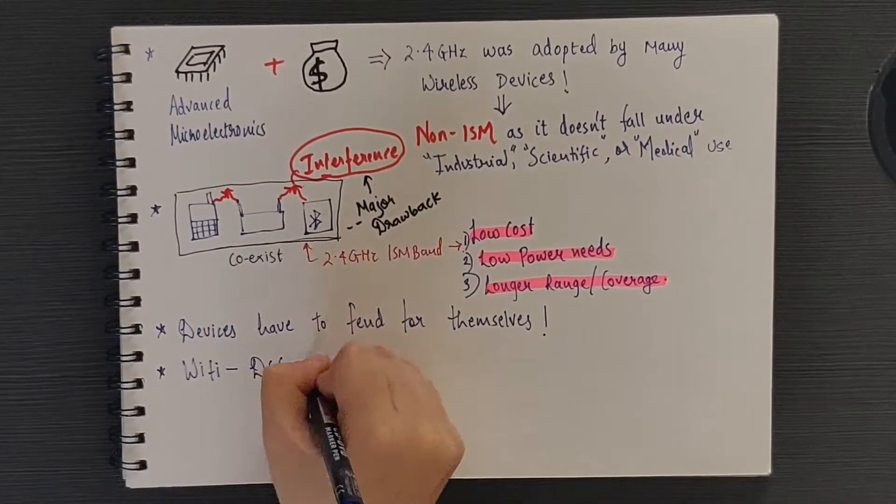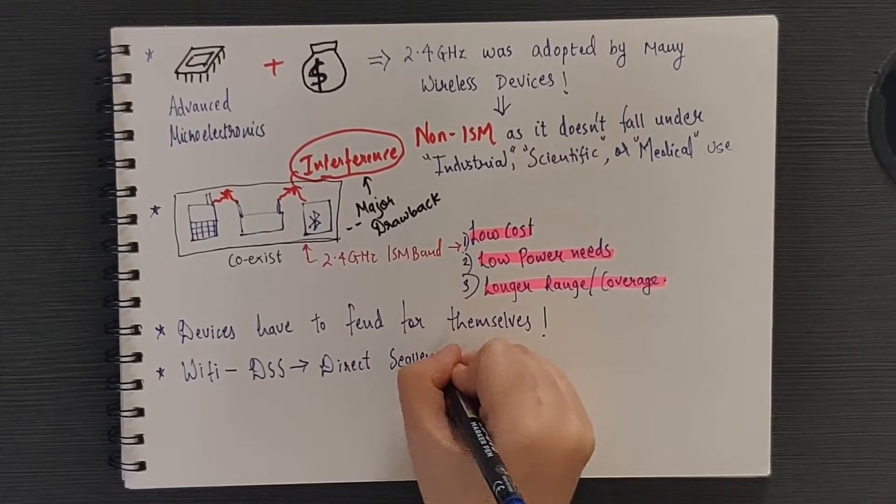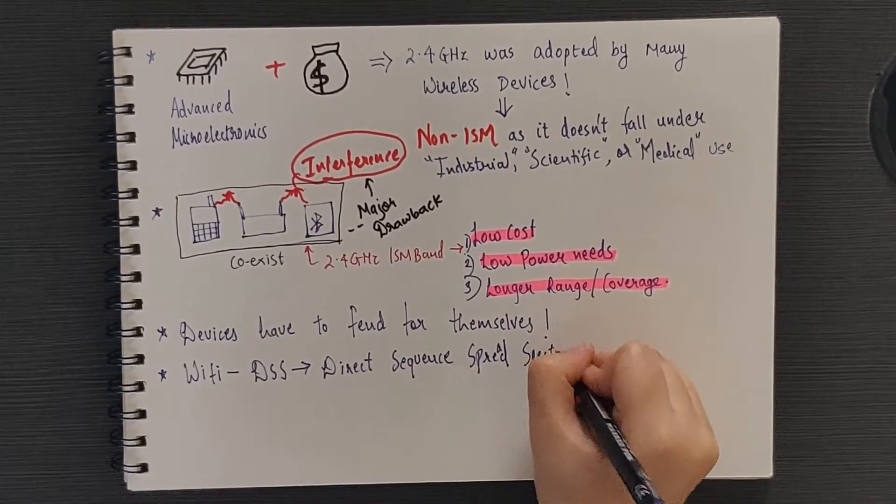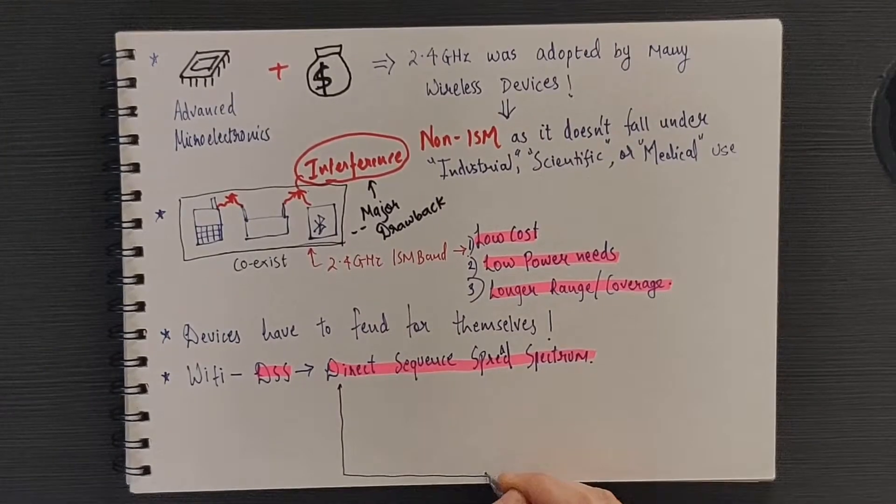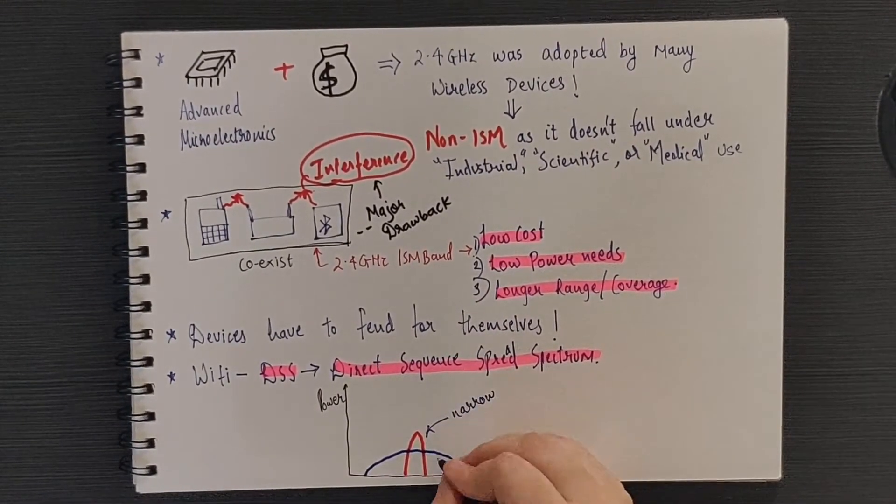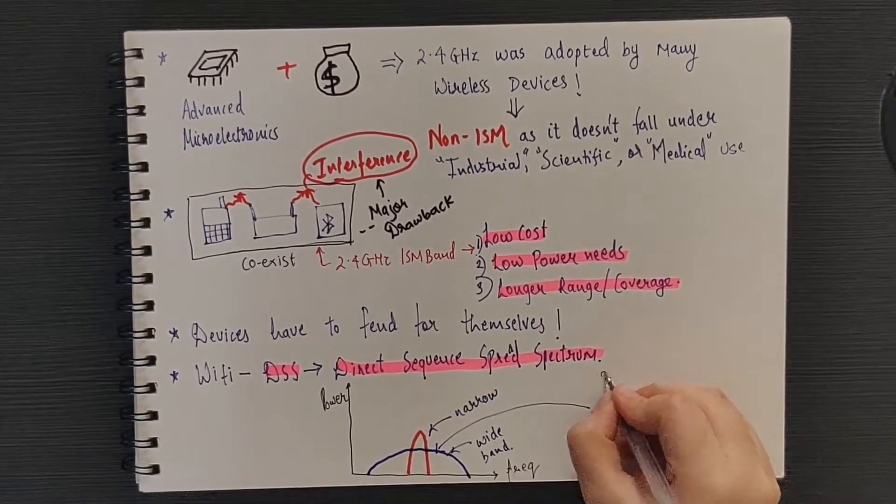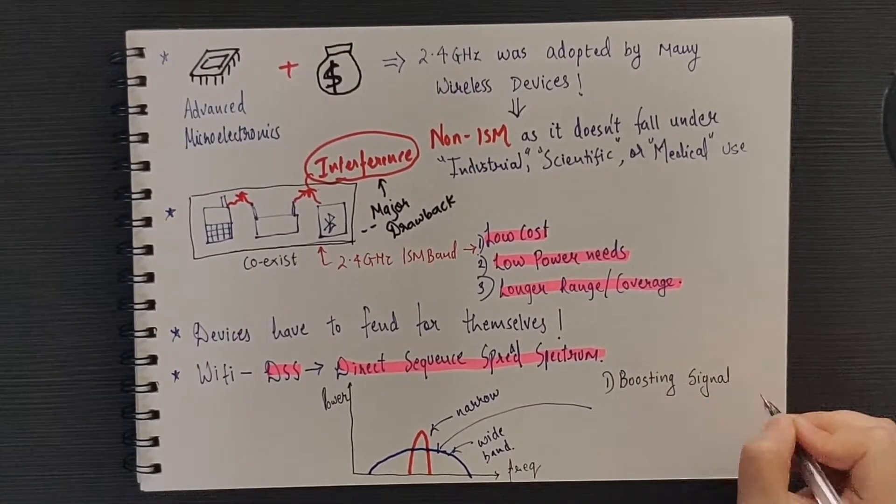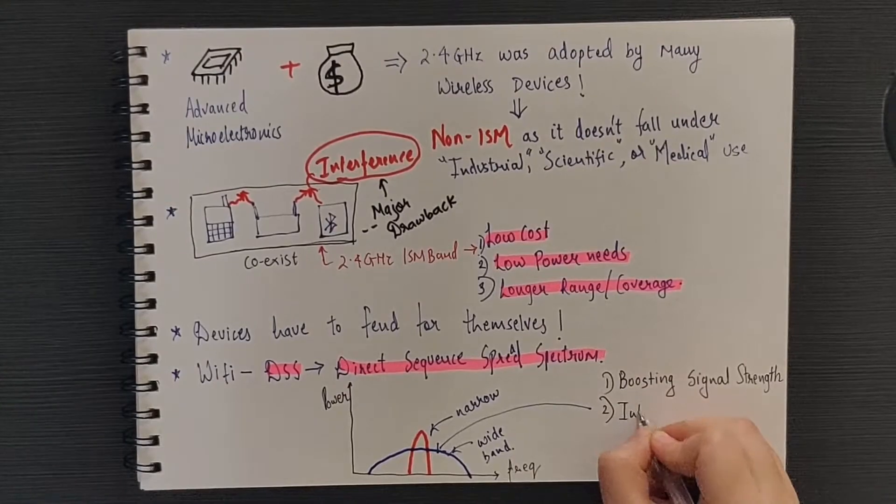Wi-Fi, for example, uses DSS or Direct Sequence Spread Spectrum transmission, where it spreads all signals over the entire ISM band. Also, the interference in case of Wi-Fi is minimized by boosting the signal strength and by writing a more intelligent firmware for the router.